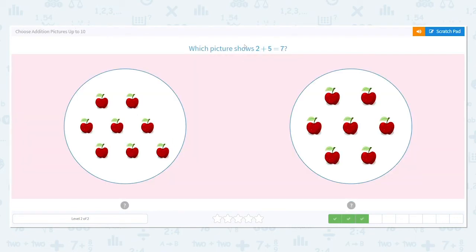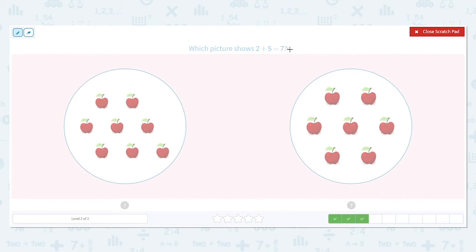Next, which picture shows 2 plus 5 equals 7? So we want a total of 7. Let's count our apples. Count out loud. 1, 2, 3, 4, 5, 6, 7, 8. I don't know if it could be that one because we don't want 8 total apples. We want 7 total apples. Let's count the other side.